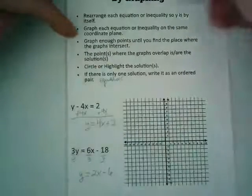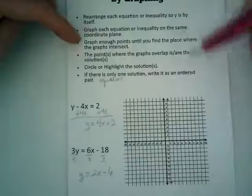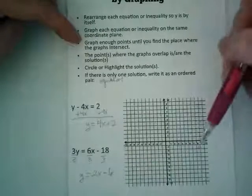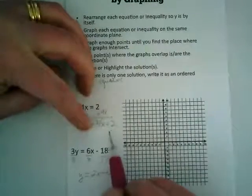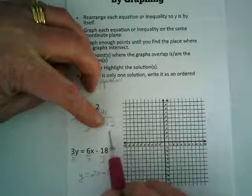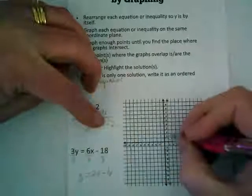So we're going to graph each equation on the same coordinate plane. We're going to make two lines on one graph. Let's start with the first equation. What's its y-intercept? 2. So we're going to put a point at 2.